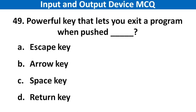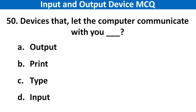Next question: The powerful key that lets you exit a program is. Right answer is option A: Escape key. Next question: The device that lets the computer communicate with you is. Right answer is option D: Input/output device.